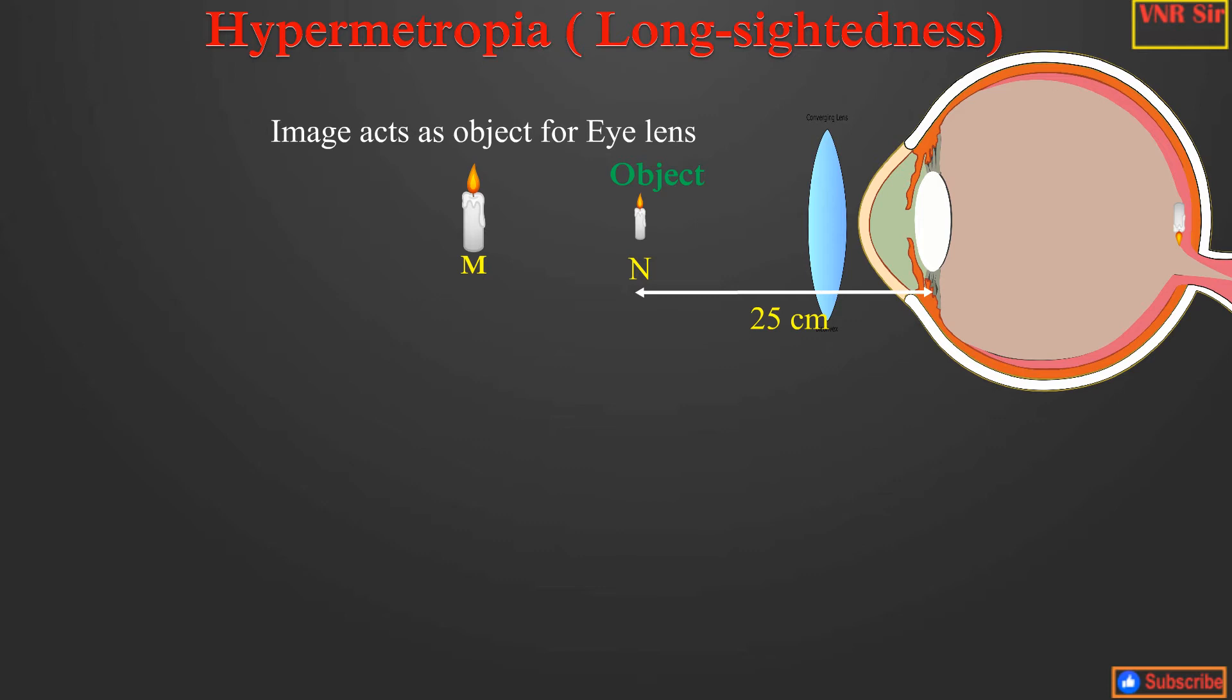Now what could be the focal length of the convex lens to be used to correct this hypermetropia? It can be calculated easily.